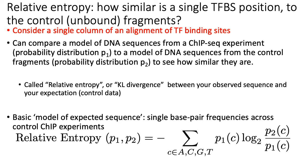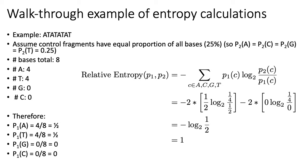The equation for computing relative entropy is shown at the bottom of the slide. It should look pretty similar to the entropy calculation, although there are some differences because there's P1 and P2 instead of just one single set of frequencies. To walk through an example: consider a single column of the TF binding site alignment from the bound fragments where we see the bases AT, AT, AT, AT — so A half of the time and T half of the time.